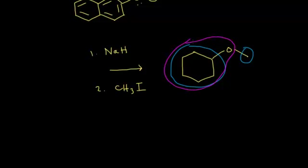Your starting alcohol must come from the cyclohexyl portion. So the starting alcohol would be cyclohexanol. Adding sodium hydride removes the proton to form an alkoxide, which then nucleophilically attacks the methyl iodide to add the methyl group and form the ether. That's how to think about using the Williamson ether synthesis — apply retrosynthesis and choose the least sterically hindered alkyl group for your alkyl halide.